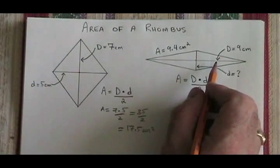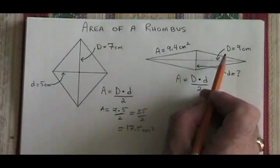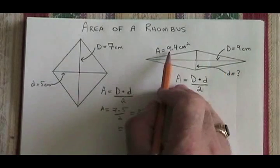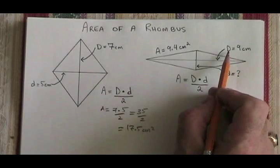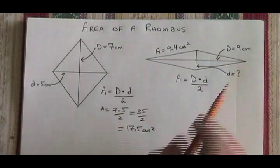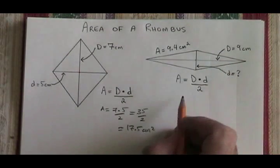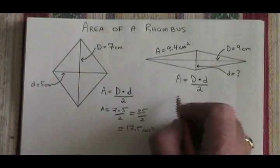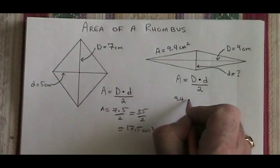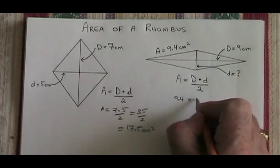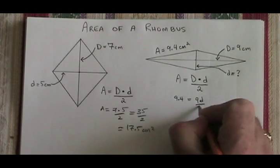In this second rhombus, we know the area is 9.4 cm² and we know the long diagonal is 9 cm. We are being asked for the length of the short diagonal. So filling in the formula, I write 9.4 equals 9 times little d over 2.